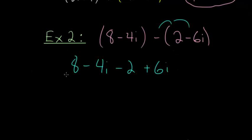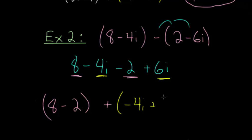And now that the negatives have been distributed, we can combine our real parts together, and we can also combine our imaginary parts together. So the real parts would just be 8 minus 2, so we have 8 minus 2, and then we're going to add the imaginary parts. And that would be minus 4i plus 6i.